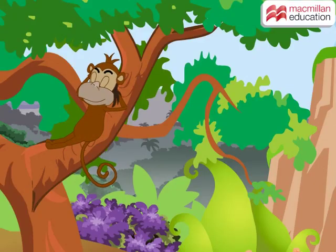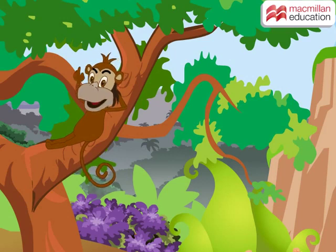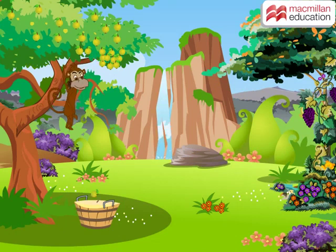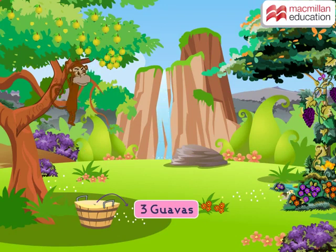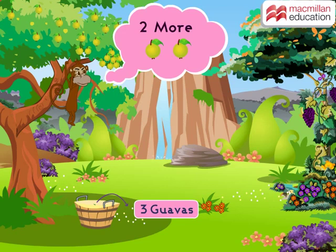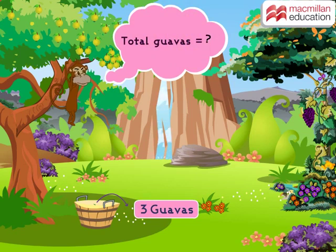Hello kids! This is Kiki on the guava tree. Say hello to Kiki! He is collecting guavas in his basket for his baby monkey. So far he has collected three guavas and he wants to collect two more. Kiki wants to know how many guavas he will have in total. Let us help Kiki find out the total number of guavas.